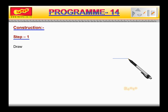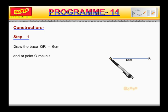Step 1. Draw the base QR is equal to 6 cm and at point Q make an angle Q is equal to 60 degrees.